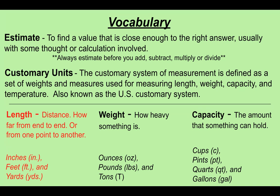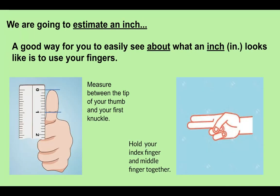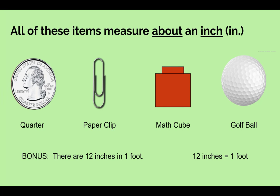We are going to estimate what an inch is. A good way to see about what an inch looks like is to use your fingers. Measure between the tip of your thumb and your first knuckle — that first line on your thumb — is about one inch. Or you can hold your index finger and middle finger together, and the distance between the two fingers is about an inch. All of these items measure about an inch: a quarter, a paper clip, a math cube, and a golf ball. Remember, there are 12 inches in a foot.